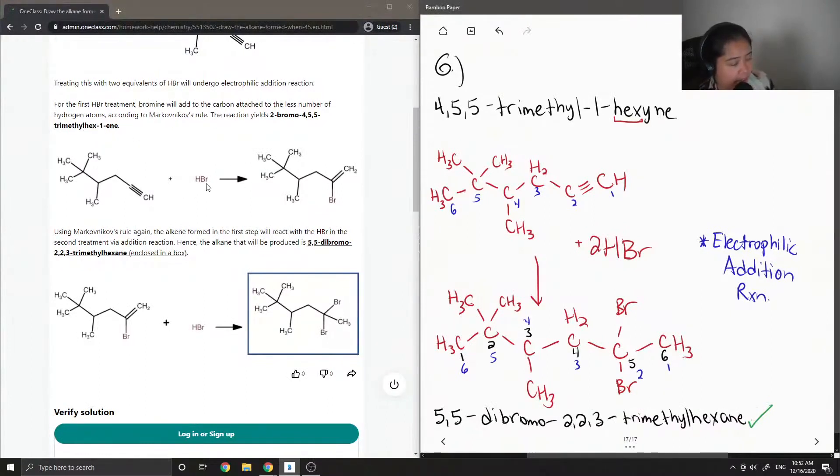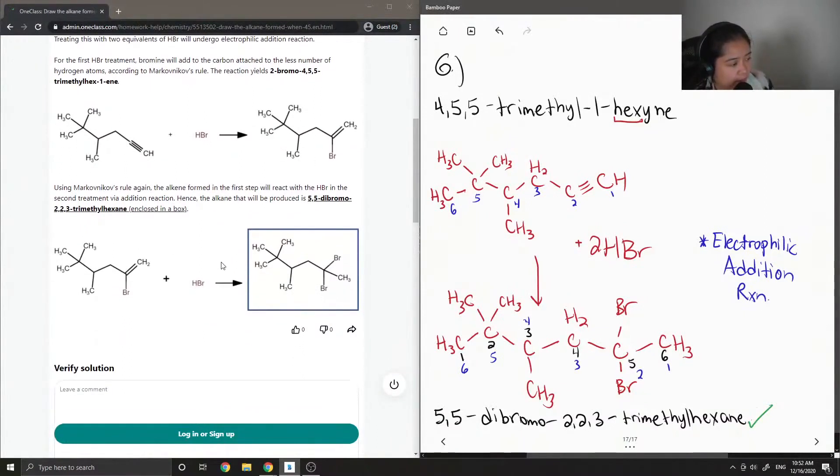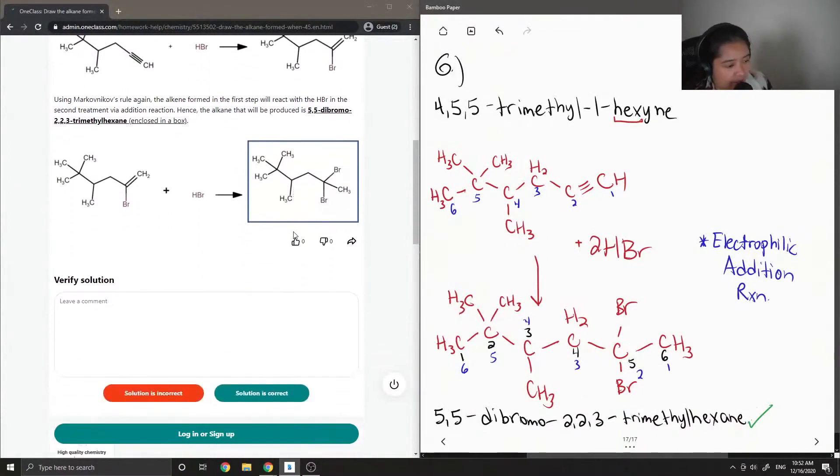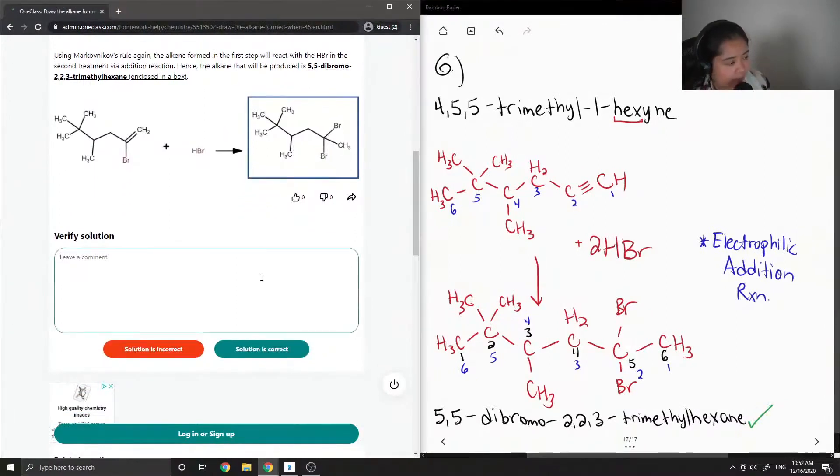So this is only if one HBr was added. They show what it would look like. And then using Markovnikov's rule again, the alkene formed in the first step will react with the HBr. And the second treatment via addition reaction, hence the alkane that will be produced, is 5,5-dibromo-2,2,3-trimethylhexane. Yep, so the solution is correct.